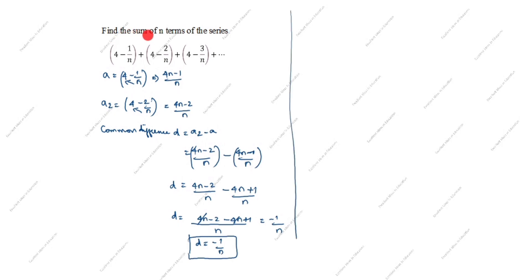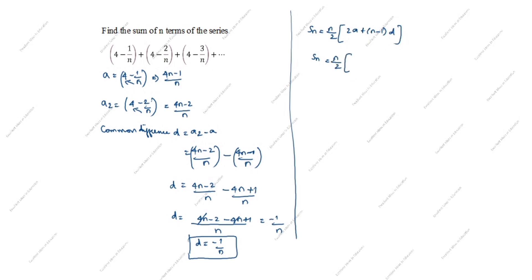Now we apply the sum formula: Sn = n/2 × [2a + (n-1)d]. We know a = (4n - 1)/n and d = -1/n. Substituting into the formula: Sn = n/2 × [2 × (4n - 1)/n + (n - 1) × (-1/n)].